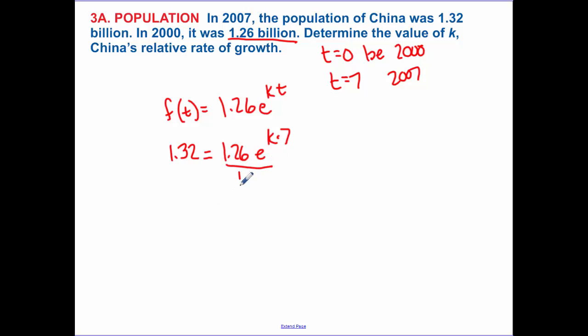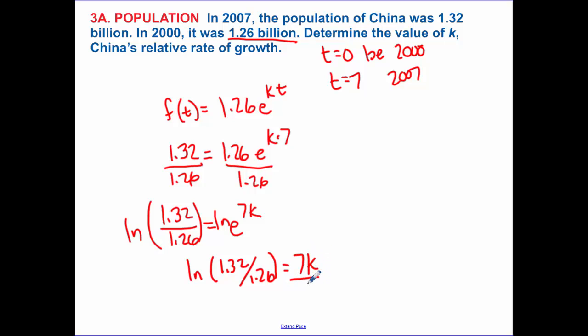So I divide by 1.26, I divide by 1.26. So I have this 1.32 divided by 1.26, I'm not finding that in my calculator yet, equals e^(7k). Now I take the natural log, or I should say I should write that as a natural log. I have the natural log of 1.32 divided by 1.26 equals 7k. I divide by 7. So k is equal now to 0.0066.